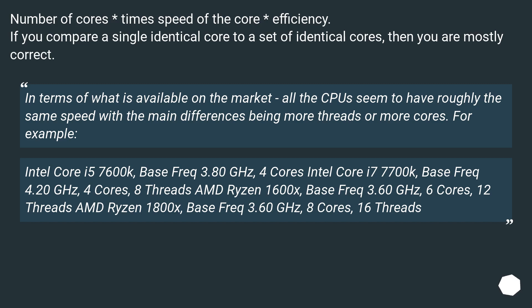For example: Intel Core i5-7600K, base frequency 3.80 GHz, 4 cores. Intel Core i7-7700K, base frequency 4.20 GHz, 4 cores, 8 threads. AMD Ryzen 5 1600X, base frequency 3.60 GHz, 6 cores, 12 threads. AMD Ryzen 7 1800X, base frequency 3.60 GHz, 8 cores, 16 threads.